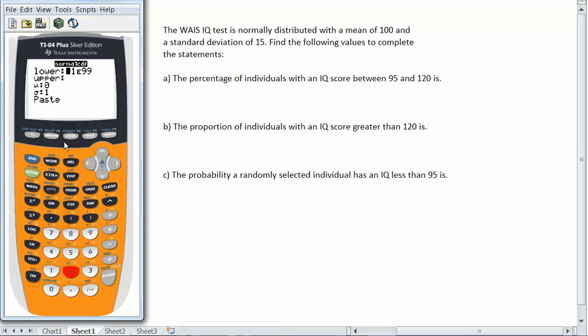If I look at part A, I want the percentage of individuals with an IQ score between 95 and 120. So I have a range of values here, and the lower limit of that range is 95, and the upper limit of that range is 120. So I'm going to type in those lower and upper limits in the appropriate place.